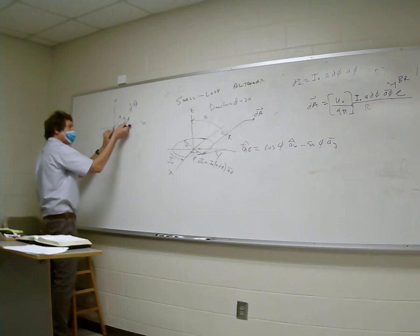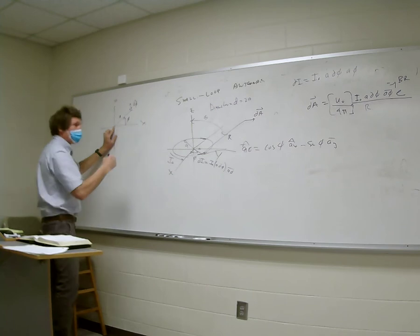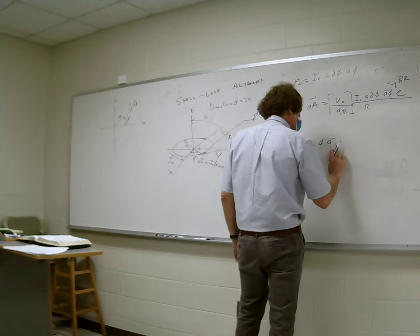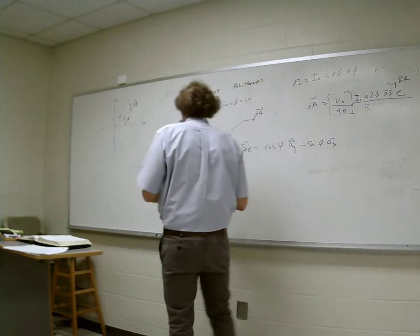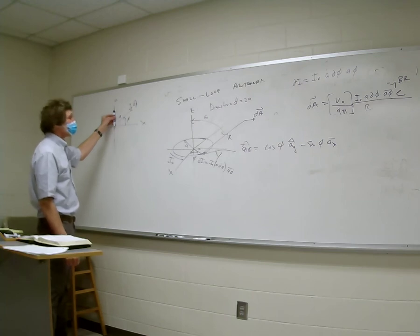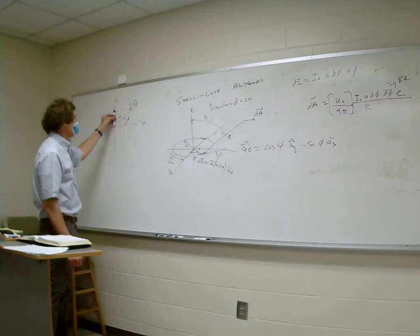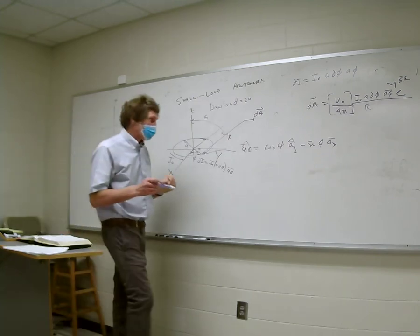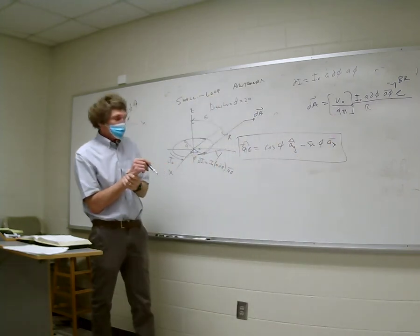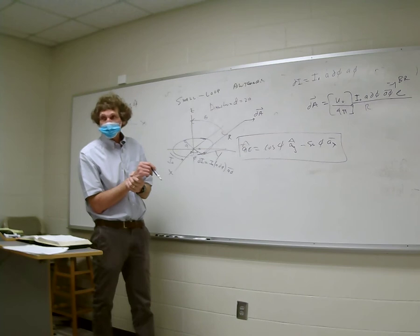Just take this vector and let φ go to zero — it's all A_x. When φ becomes 90 degrees, it becomes negative sine(φ)·A_x. So A_phi = cosine(φ)·A_x minus sine(φ)·A_y. This is what A_phi breaks down to in Cartesian coordinates.